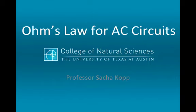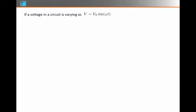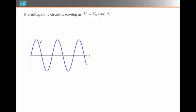Next I want to talk about the generalization of Ohm's law for alternating current circuits. If a voltage is varying as V₀ sin(ωt), and it looks like a sine wave like this, the current is going to be varying as I₀ sin(ωt - φ).